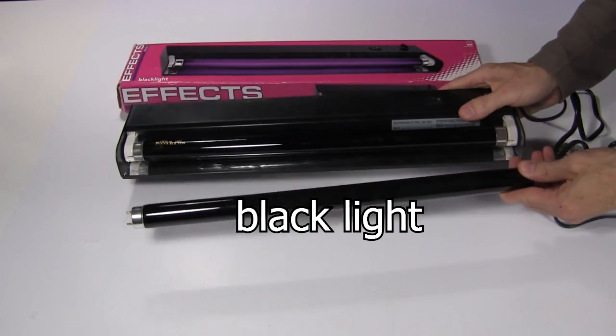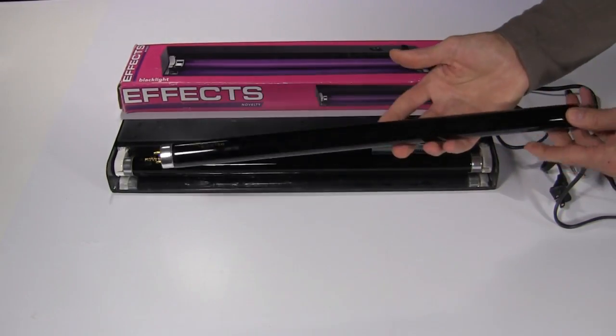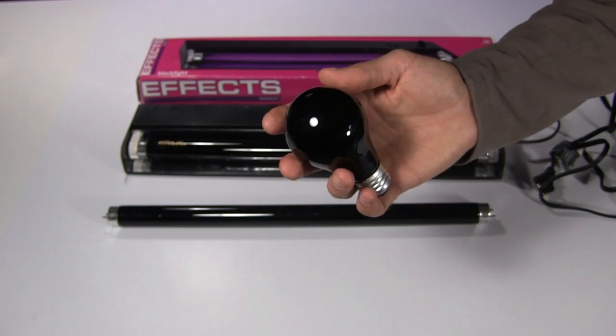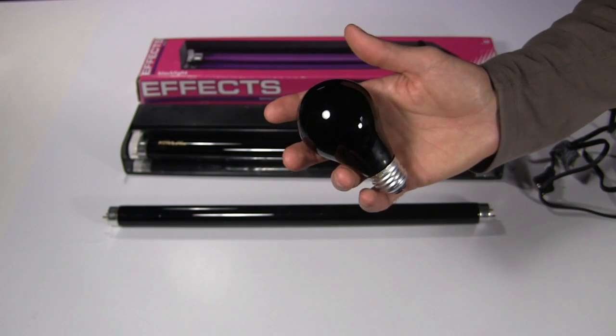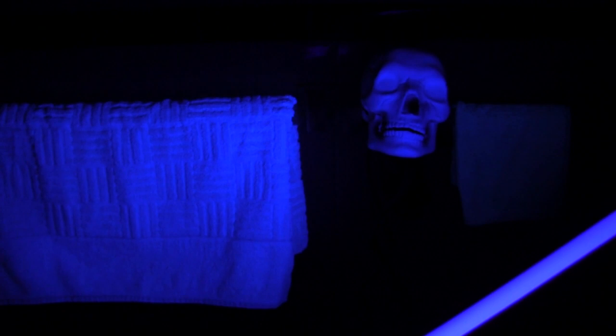Next, get a black light, which is a fluorescent lamp that gives off ultraviolet light. This one came from Home Depot a number of years ago. There are also incandescent light bulbs sold as black lights, but they don't seem to work. You've probably seen these black lights before.